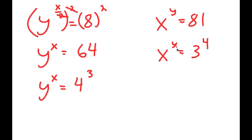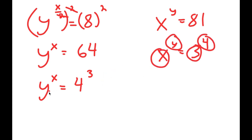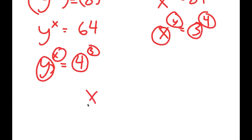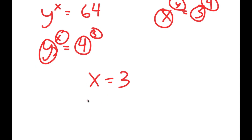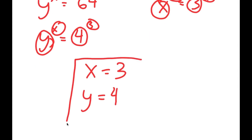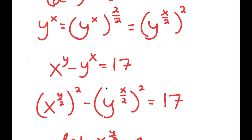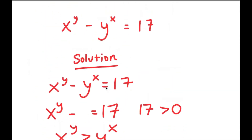So I have x to the power of y equals 3 to the power of 4, and y to the power of x equals 4 to the power of 3. By matching bases and exponents, x equals 3 and y equals 4. This is the solution to the equation.